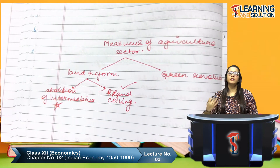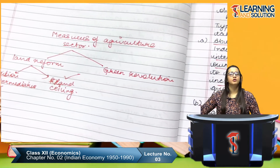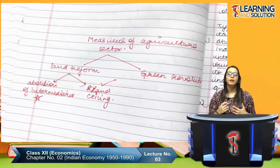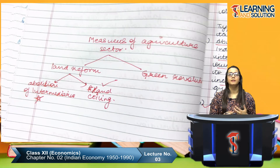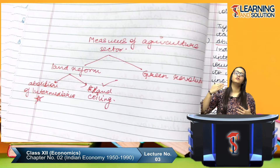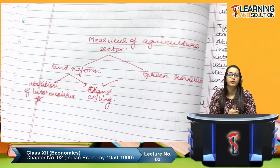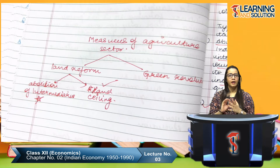We talked about the Green Revolution, whose major and primary purpose was HYV seeds. These seeds increased agriculture production, a surplus was generated, India's reliance on other countries was cut down, and the government provided loans at a lower rate of interest to help small farmers obtain HYV seeds, fertilizers, and pesticides. That was what we discussed overall in the agriculture sector.